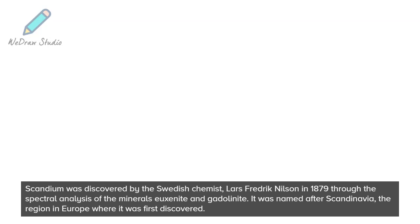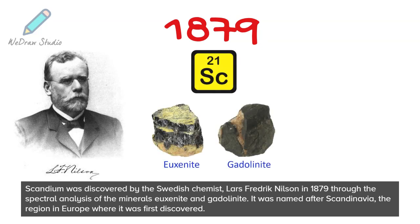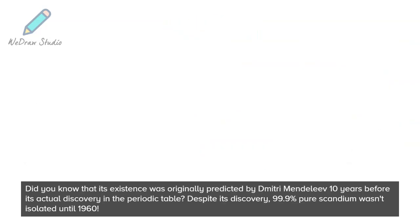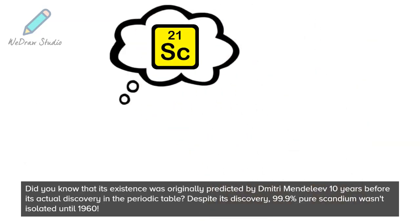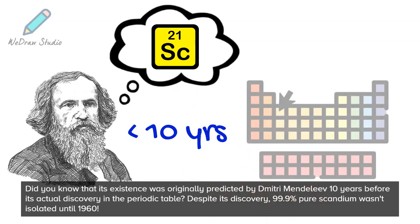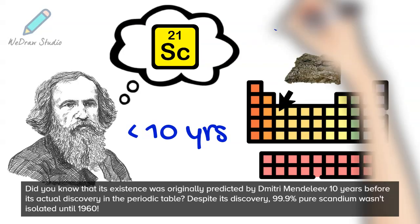Scandium was discovered by Swedish chemist Lars Friedrich Nilsson in 1879 through spectroanalysis of the minerals eucenite and gadolinite. It was named after Scandinavia, the region where it was first discovered. Did you know its existence was originally predicted by Dmitri Mendeleev 10 years before its actual discovery in the periodic table? Despite its discovery, 99.9% pure scandium wasn't isolated until 1960.